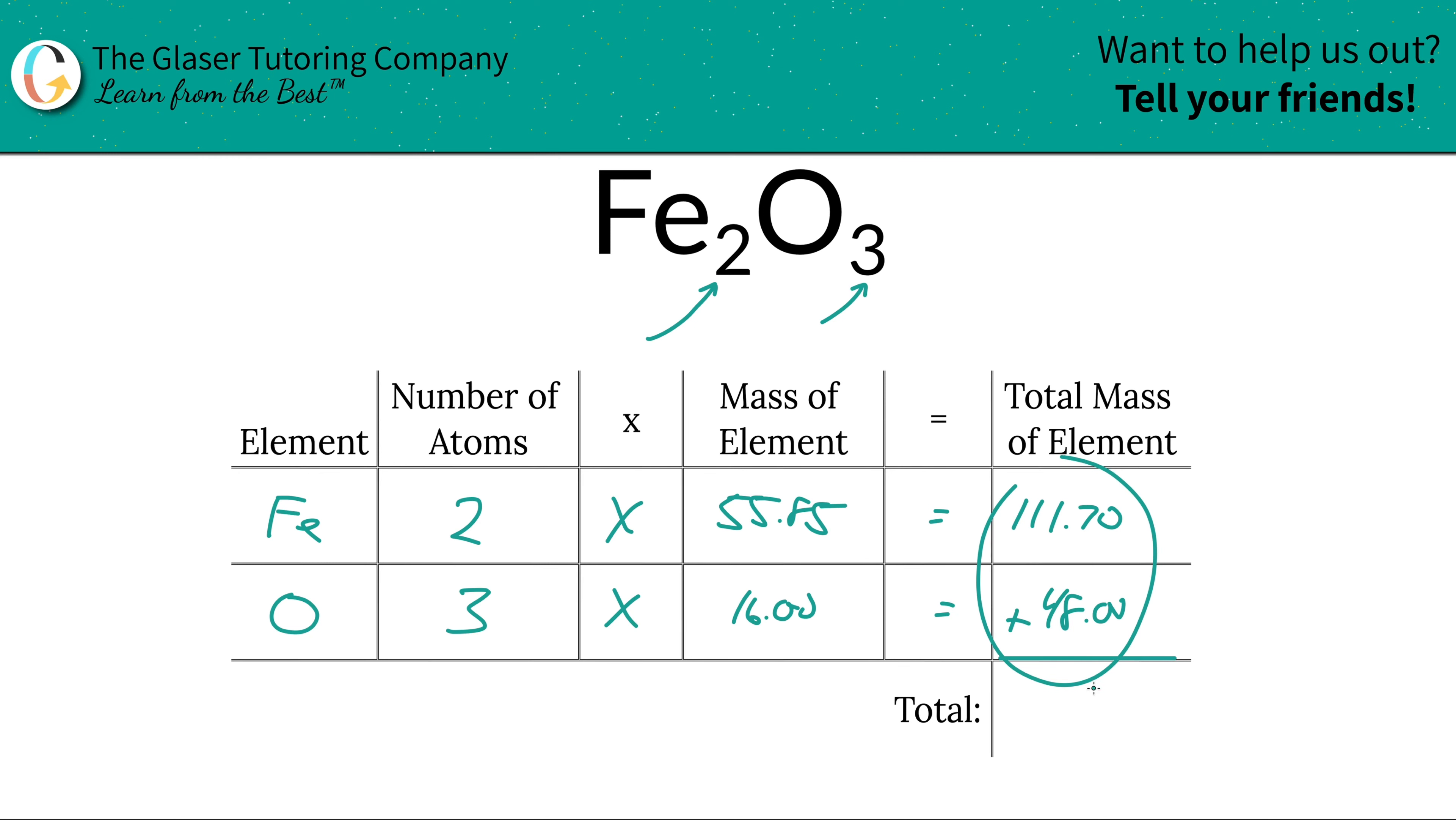And then when we add up the column here, we find the total mass of the entire compound, which is what we want to find. So 159.7. And the units here are going to be in terms of AMU, atomic mass units, because we're finding molecular mass.